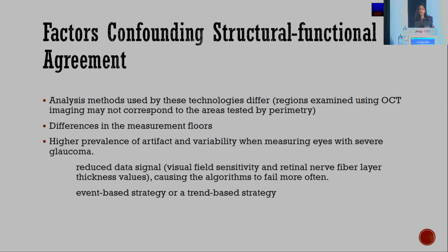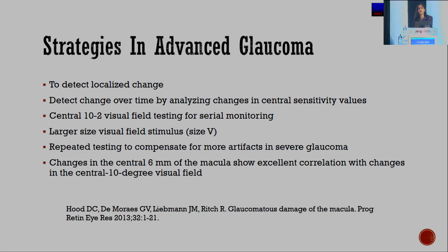Factors which confound structural-functional agreement include the different analysis methods used by these technologies, differences in measurement floors, and higher prevalence of artifact and variability in severe glaucoma due to reduced data signal. In advanced glaucoma, it becomes important to detect localized change over time by analyzing changes in central sensitivity values. Central 10-2 testing studies almost 68 points in the central 10-degree fields, and larger stimulus size can be used to detect progression. Studies have demonstrated that changes in the central 6mm of the macula show excellent correlation with 10-degree visual field testing.